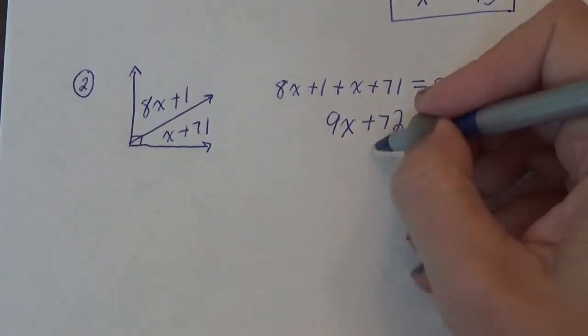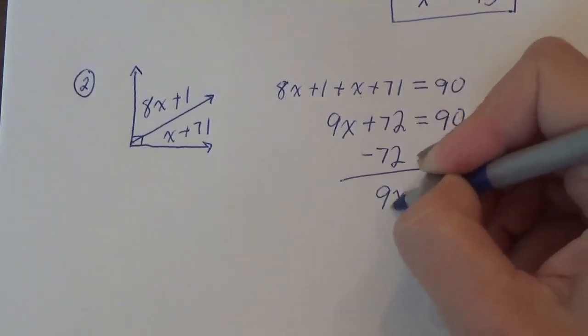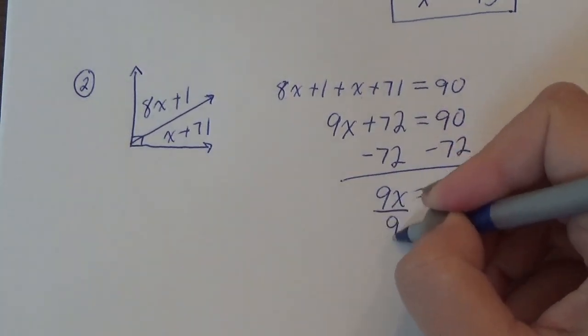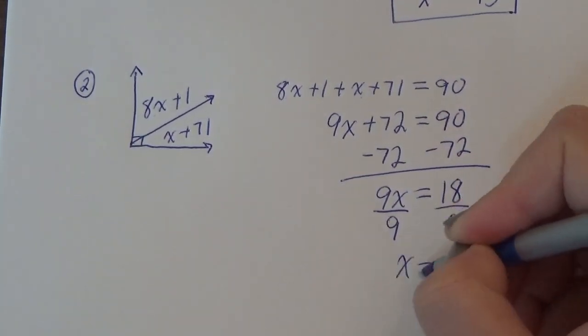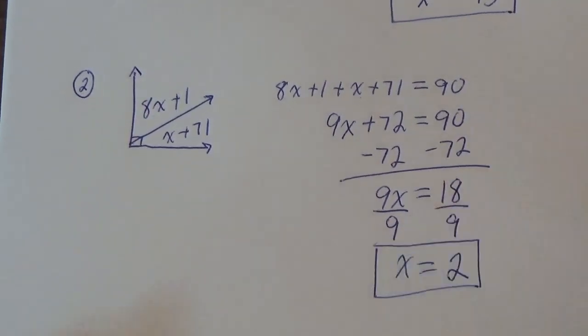Then we're going to subtract the 72. And we're down to 18. And then divide by the 9. x equals 2. All done for that one.